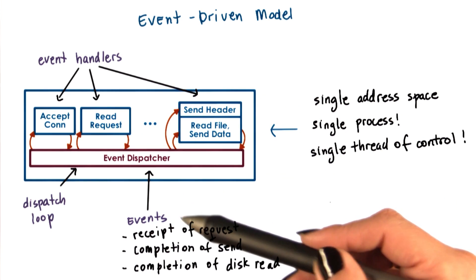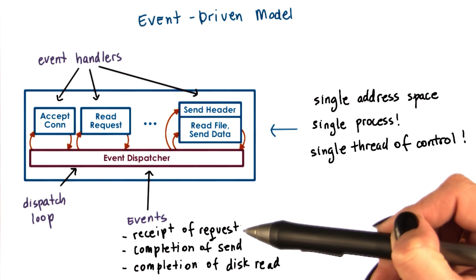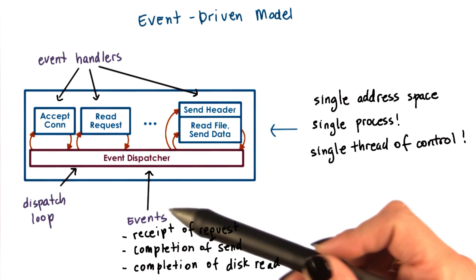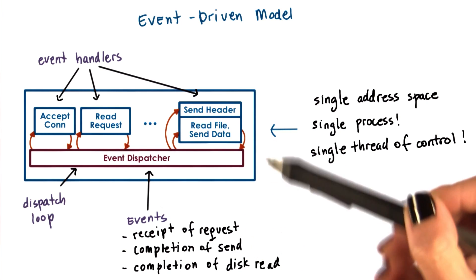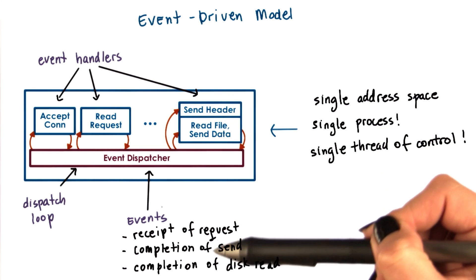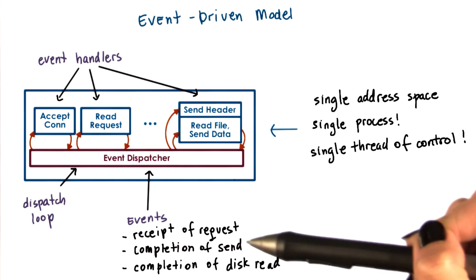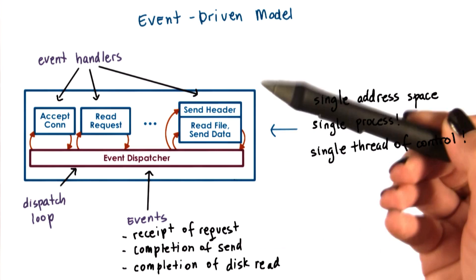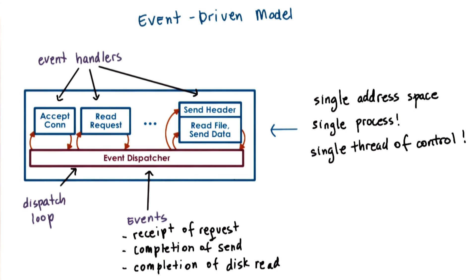Events correspond to some of the following things: receipt of a request from the client browsers — that message received from the network is an event. Completion of a send, so once the server responds to the client request and the send completes, that's another event. Completion of a disk read operation is yet another event that the system will need to handle.